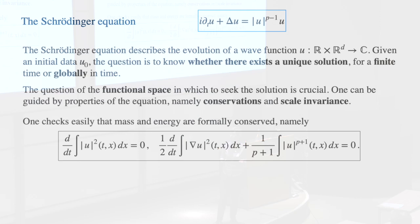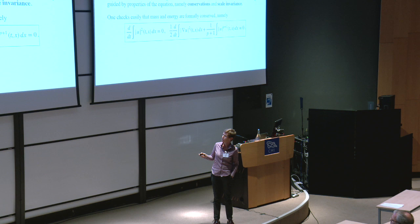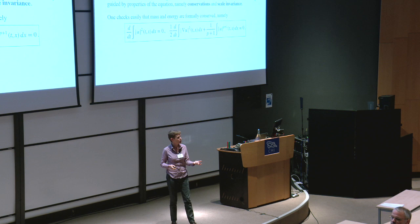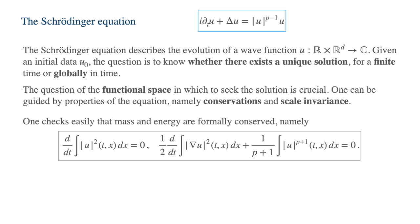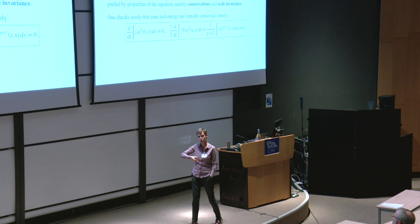The first conserved quantity is mass — U is the wave function of your system, and the mass is the square of the modulus of U, conserved in time. The second conserved quantity is the energy: kinetic energy plus some potential energy. Those are conserved in time. The L2 norm will never blow up, and the H1 norm — meaning one derivative in L2 — will never blow up in finite time. If your initial data is in that space, your solution will stay in that space forever.